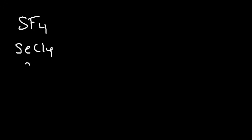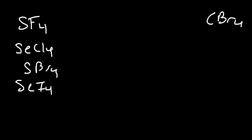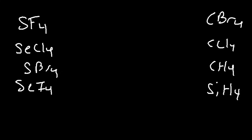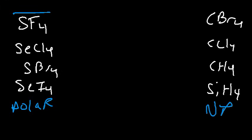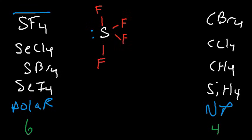The next category includes molecules like SF4, SeCl4, SBr4, and SeI4 — these are different from CBr4, CCl4, CH4, or SiH4. The SF4-type molecules are polar, while the CBr4-type are nonpolar. Carbon has four valence electrons, while sulfur and selenium have six. Because sulfur has two more valence electrons than carbon, its Lewis structure has an extra lone pair, giving it a seesaw shape rather than a tetrahedral shape.